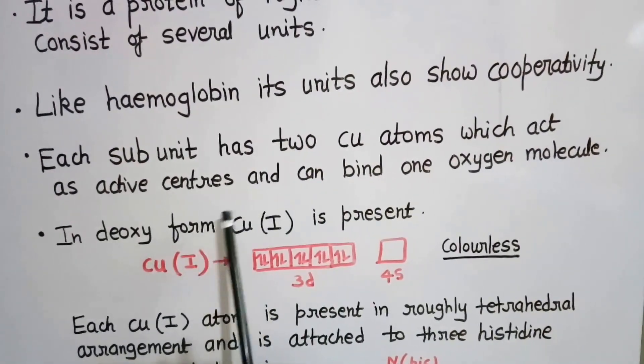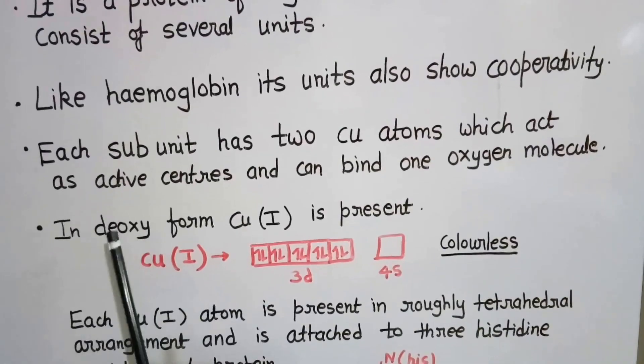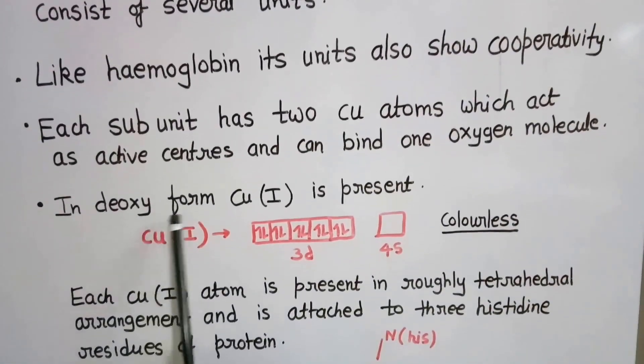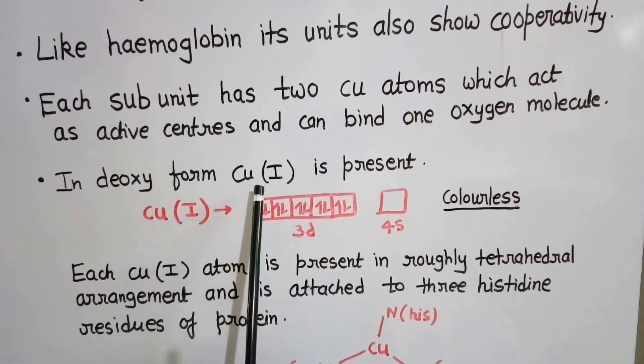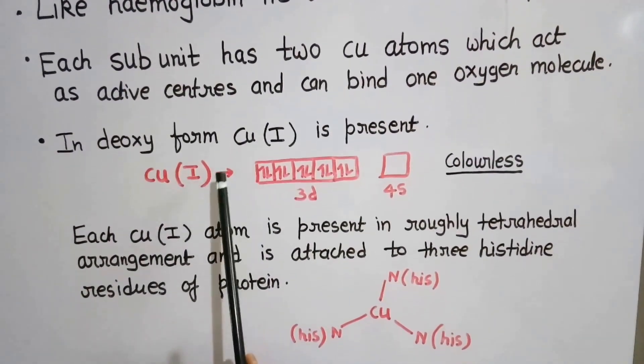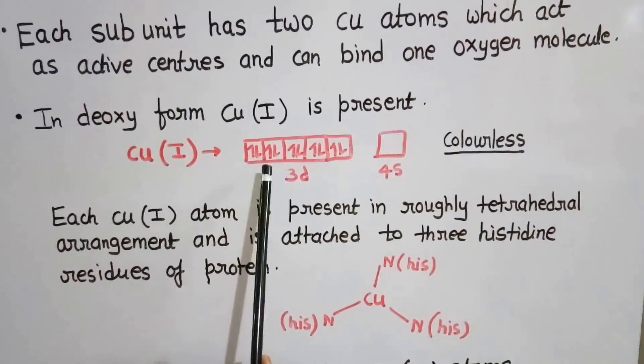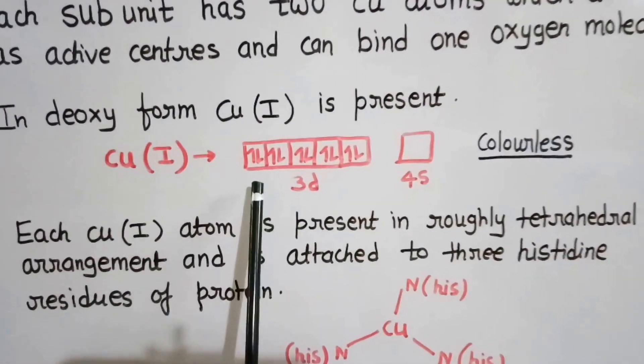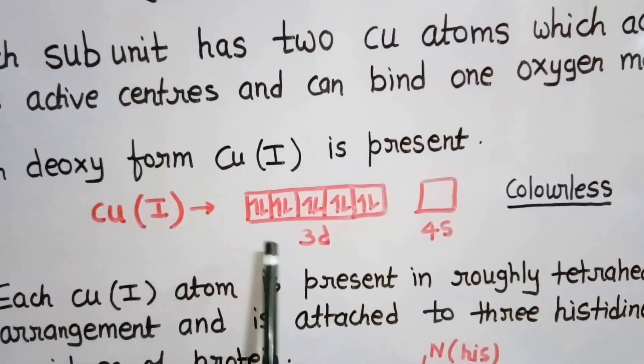When oxygen is not bound to hemocyanin, when it is in the deoxy state, the copper is present in the +1 oxidation state. When copper is in +1 oxidation state, there are 10 electrons in the 3d orbital, meaning it is in the d10 state.